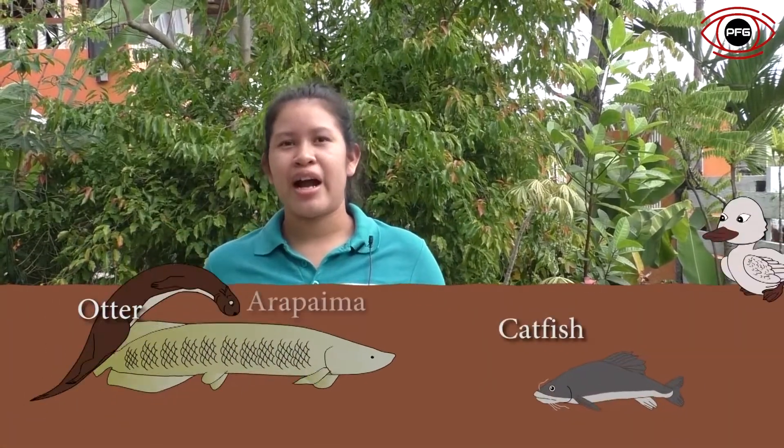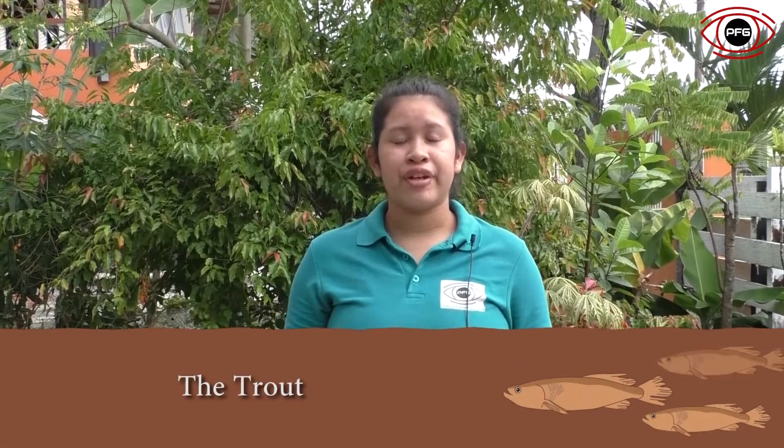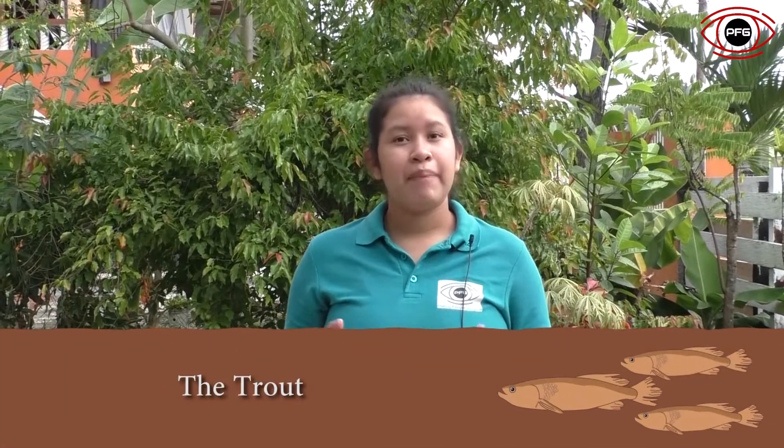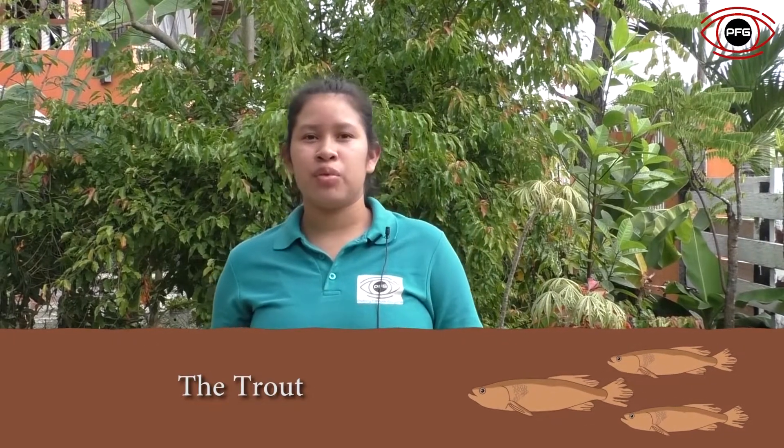Did you know that 40% of the world's fish live in freshwater environments? Some of these animals are the otter, catfish, arapaima, and ducks. However, animals like the trout only live in flowing freshwater because they need the movement of the water to survive.